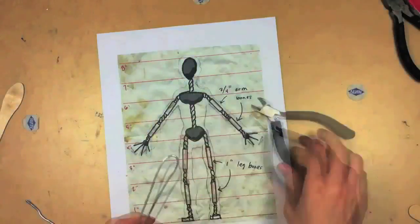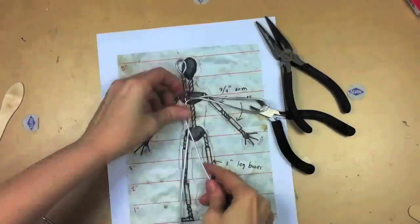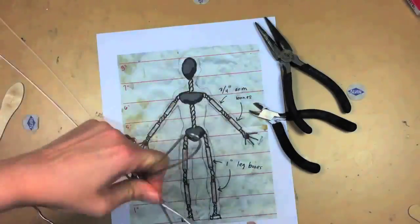While that is setting, we're going to bend out the main body. I like to use 1/16th or 3/32nd inch aluminum wire.